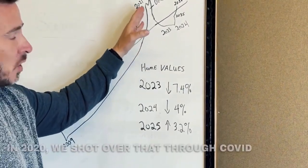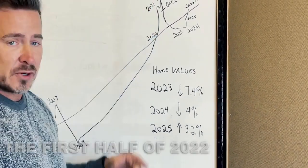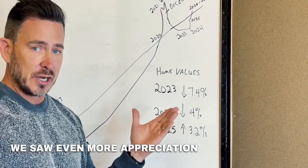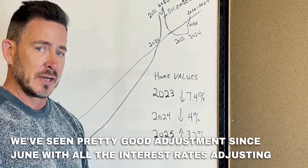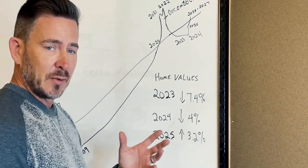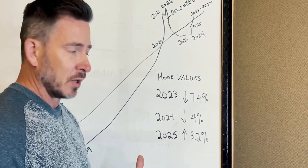And in 2020, we actually shot over that through COVID, into 21, and then 22. The first half of 22, we saw even more appreciation. Now, we've seen a pretty good adjustment since June of this year with all the interest rates adjusting. We've seen anywhere from 6% to 10% drop in home values, depending on where it is and where it's located.